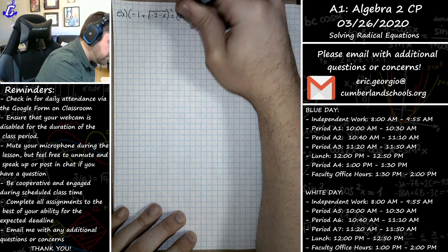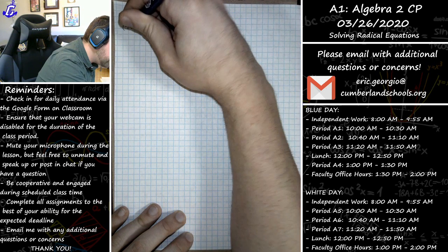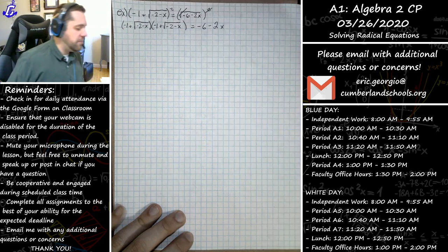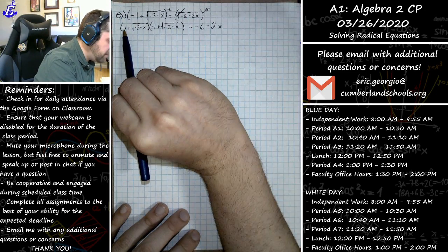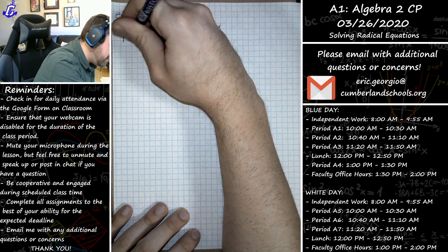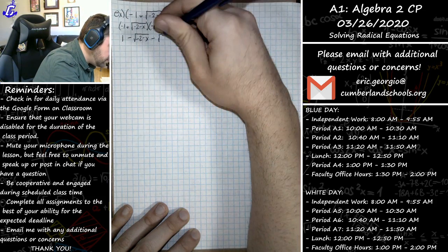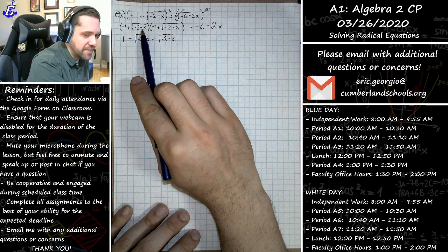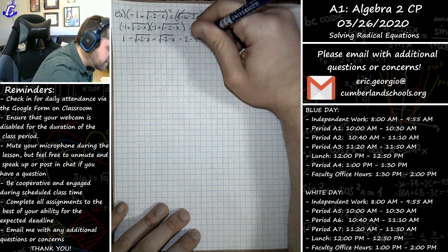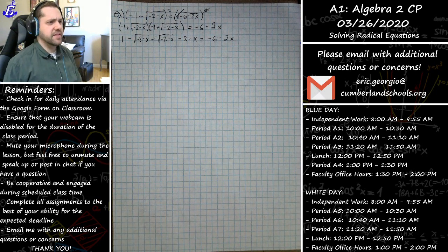On the right side the square and square root cancel out, leaving negative 6 minus 2x. On the left side we take that binomial and multiply it by itself: negative 1 plus the square root of negative 2 minus x, times itself. Doing first-outer-inner-last: negative 1 times negative 1 is positive 1; negative 1 times the square root of negative 2 minus x is negative the square root of negative 2 minus x; the inner gives another minus the square root of negative 2 minus x; and lastly the square root of negative 2 minus x times itself is negative 2 minus x. That's all equal to negative 6 minus 2x.